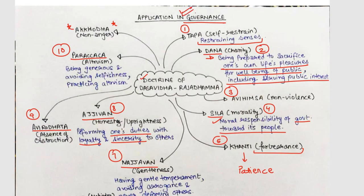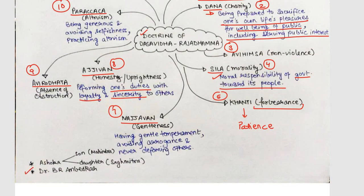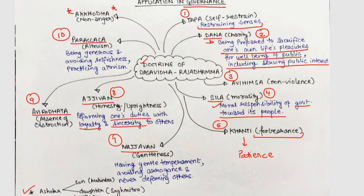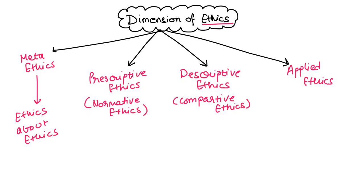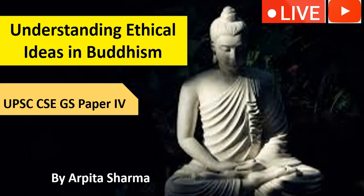The most famous personalities who followed Buddhism in their governance were Dr. B.R. Ambedkar and King Ashoka. This is how you need to study the ethical ideas of Buddhism in GS Paper 4. I hope you enjoyed today's lecture. If you enjoyed it, please like the video, share it as much as you can, and subscribe to this channel.